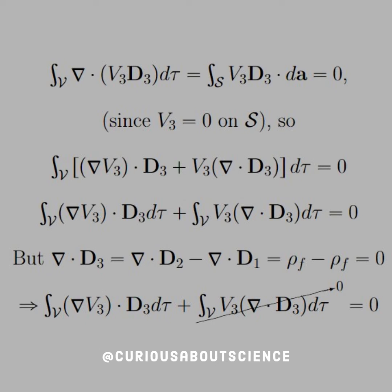Del dot V3D3 over the whole space is equal to the surface integral of V3D3 dot dA, but since we know that will go to 0 since V3 equals 0 on S.